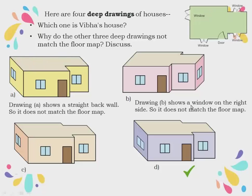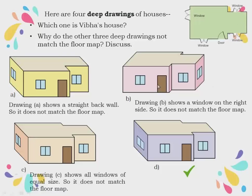Drawing B shows windows on the right side, but in the floor map there is no window on the right side, so B is eliminated. Drawing C shows all windows of equal size, but in the floor map one window is a little bit longer than the others. That is why D is concluded to be Vibha's house.